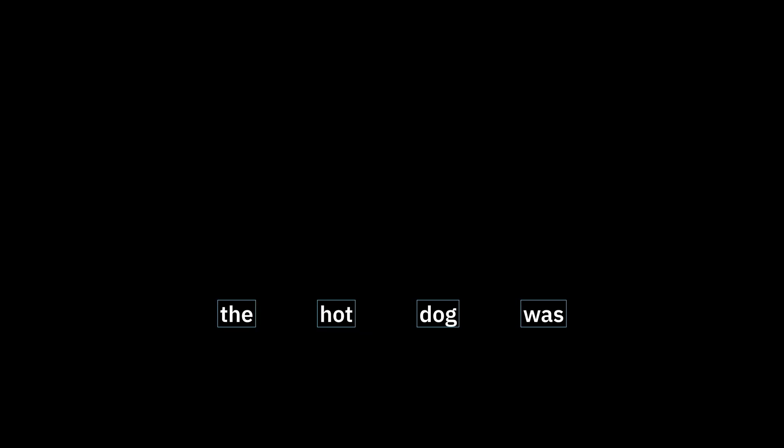Now what about 'the hot dog was'? We have the dog embedding, we have the hot embedding. So we can combine them... That's not right. Let's say you have two vectors and you want to know how similar they are. You multiply their components and add up the results. The more similar, the higher the number. This is known as the dot product.